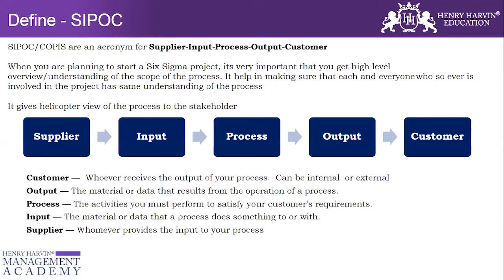In SIPOC: the Customer is whoever receives the output of a process — internal or external. Output is the material or data that results from the operation of a process. Process refers to the high-level activities you must perform to satisfy customer requirements. Input is the material or data that a process acts upon. Supplier is whoever provides the input.